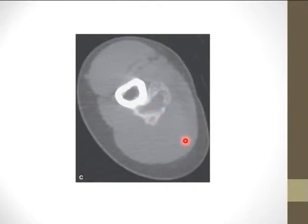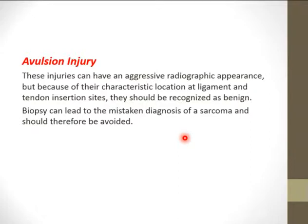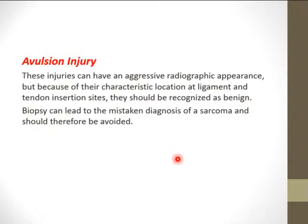Another post-traumatic don't touch lesion is the avulsion injury. It can have an aggressive radiographic appearance with periosteal reaction and sclerosis. However, because of their characteristic location at ligament and tendon insertion sites, they should be recognized as benign. Biopsy can also lead to a mistaken diagnosis of sarcoma and should be avoided. It is important to memorize the sites of avulsion injuries and tendon insertions to avoid misdiagnosis.